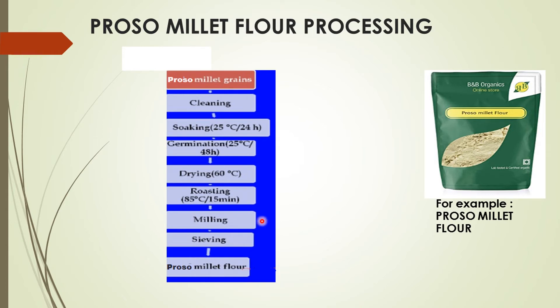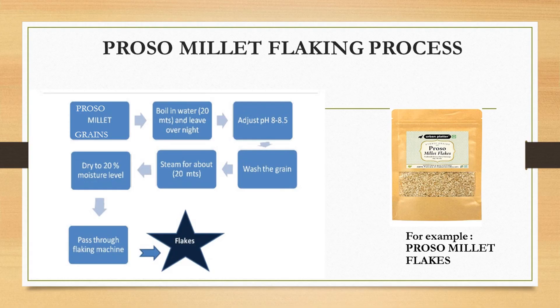Then we have milling. Here we prefer dry milling — it is a process to separate the endosperm from germ and pericarp fibers. Then we have sieving, where we sort and grade it according to size. Then we obtain ProSomulet flour. This is an example of ProSomulet flour.